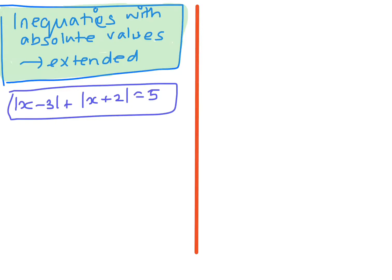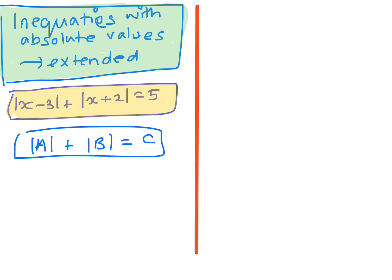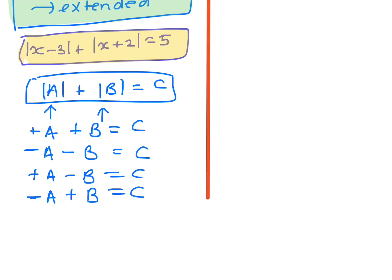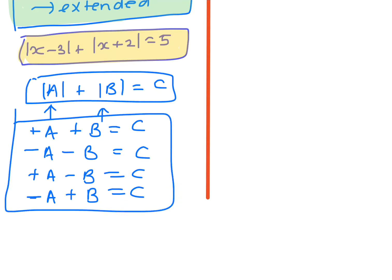Looking at inequalities with more than one absolute value — a little bit trickier. If you have the absolute value of a plus the absolute value of b equals c, what's inside each absolute value could be plus or minus. So you could have plus a with plus b, minus a with minus b, plus a with minus b, and minus a with plus b — four different possibilities to consider.